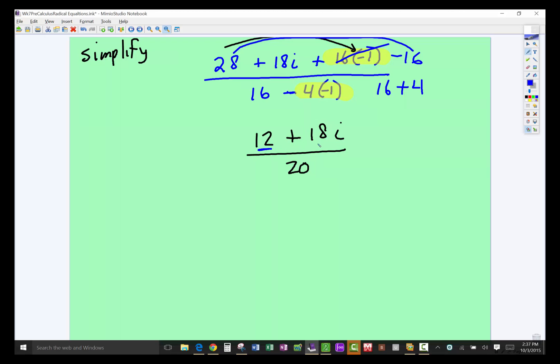Now notice, these all have something in common. A 2 can be factored out. So what I did is I just rewrote each number, factors of 2. And then notice, the 2's can cancel, giving us 6 plus 9i all over 10.